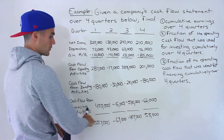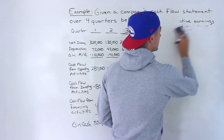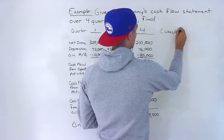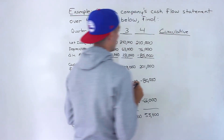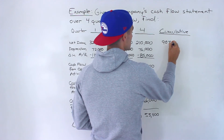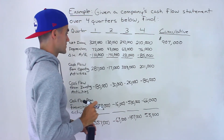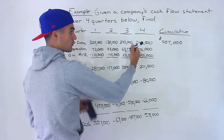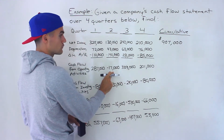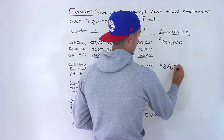So what I'm going to do to start off, before actually getting into answering, let's get the total cumulative amount. If we add up all of the net incomes, what we would end up with is $907,000. So that's actually the answer to number one — that is the net income for the entire year over the four quarters. Now the cash flow from operating activities, if we net all of these out — watch out for this negative over here — we would end up getting $804,000.